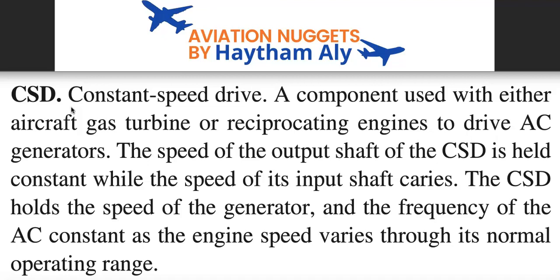So by this point we have explained the difference between IDG and generator — why the electrical generation component on the engine is called IDG, and the electrical generation component on the APU is called just a generator. Now let's dig deeper into the definition of the Constant Speed Drive.